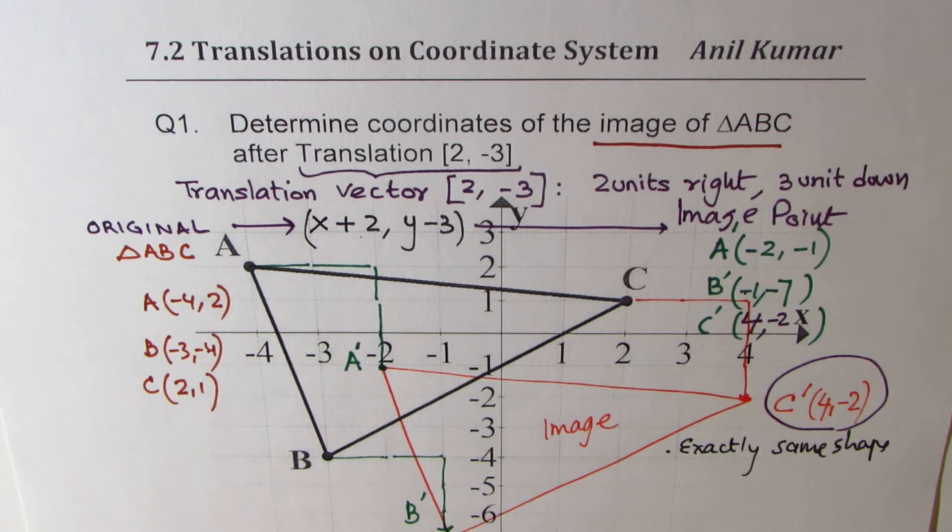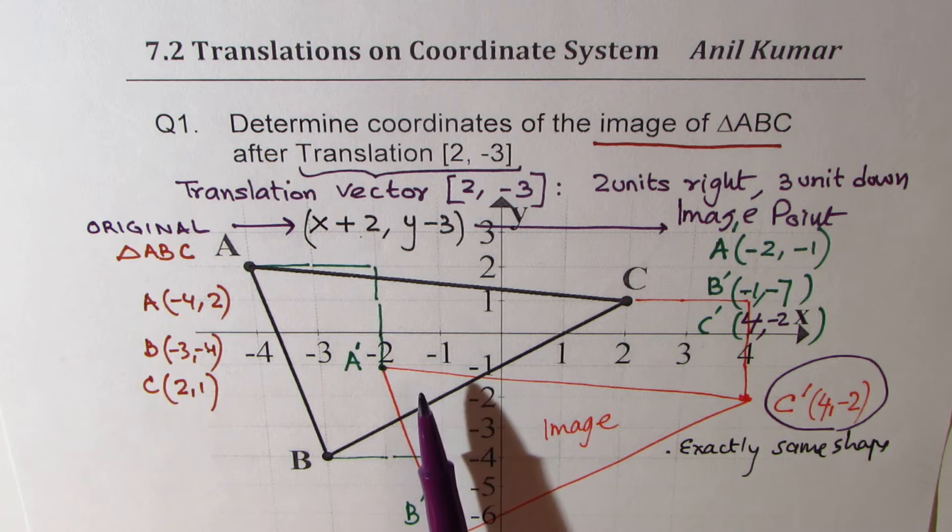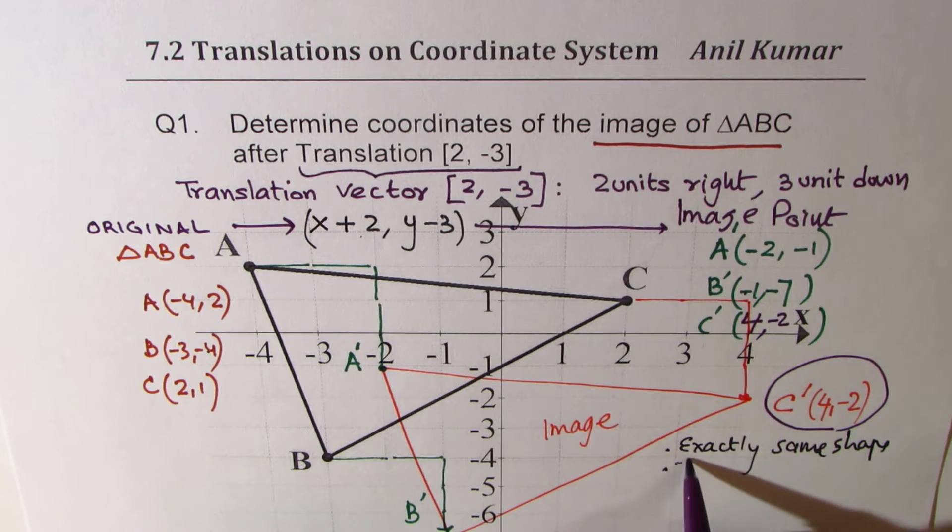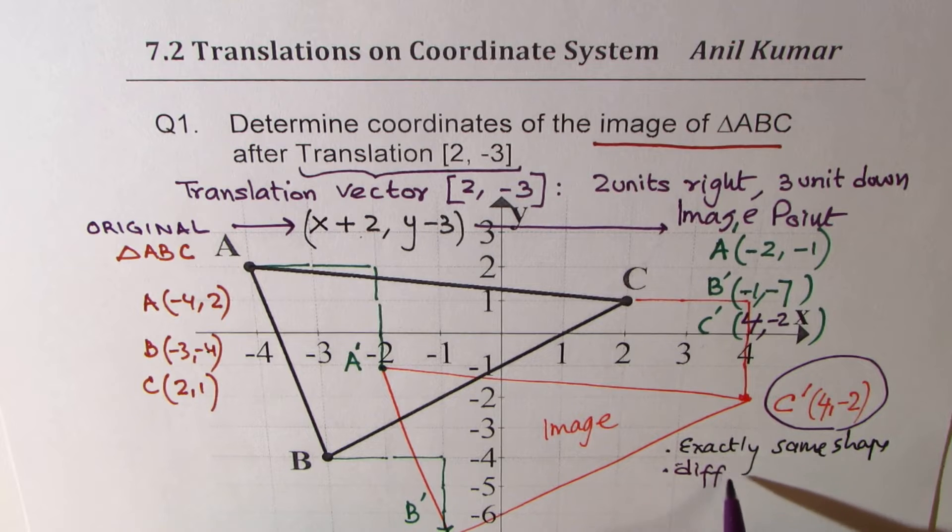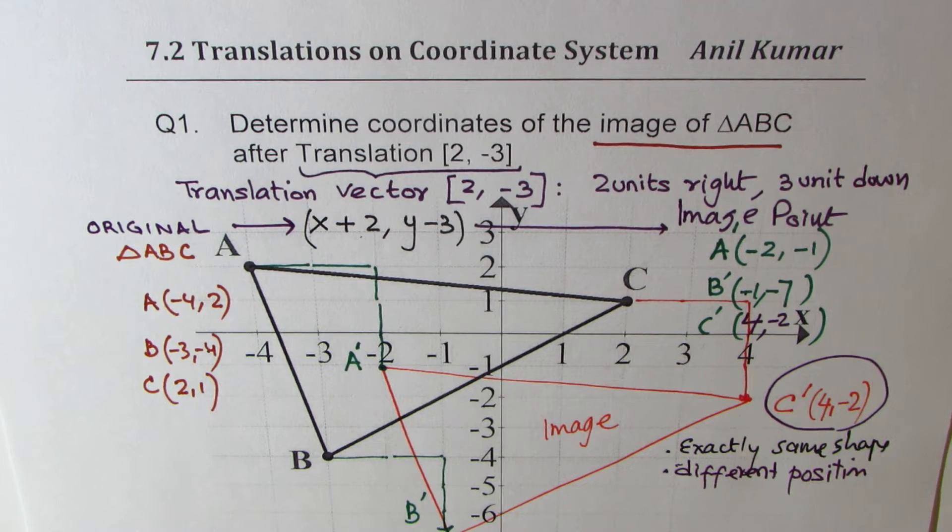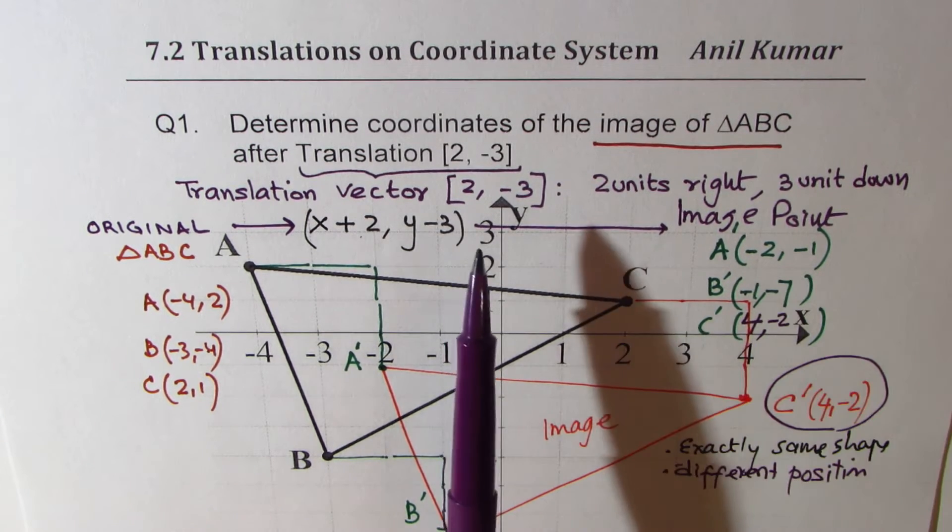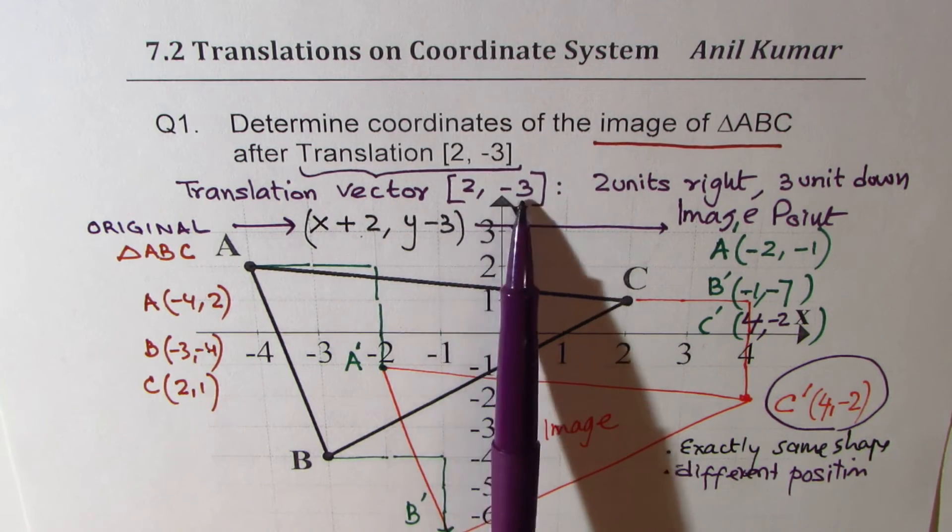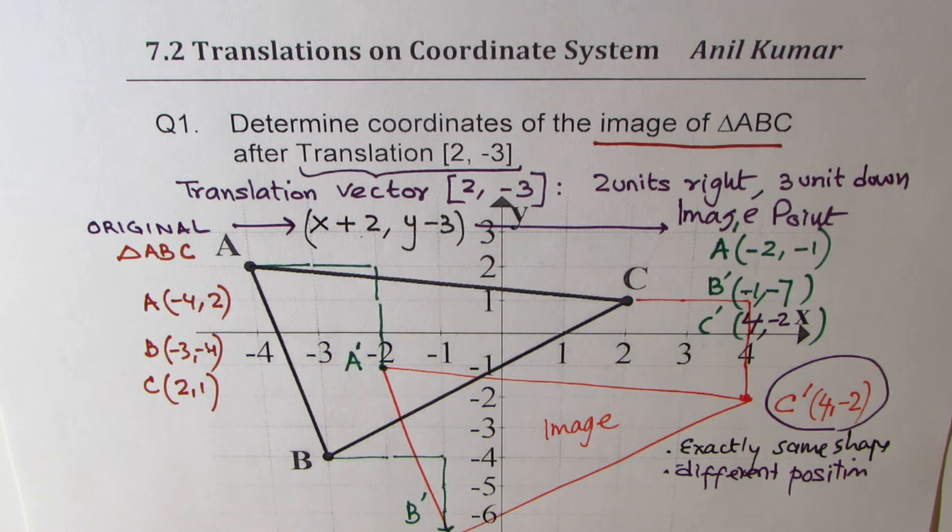So what you have learned here is that whenever you translate, then the image is exactly congruent to the original shape. Shape does not get changed or deformed, only position changes. So exactly same shape, different position. And to find the image points, we have to use the translation vector. Just add that translation vector to get the image points.